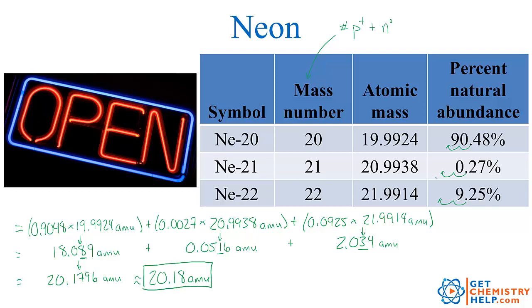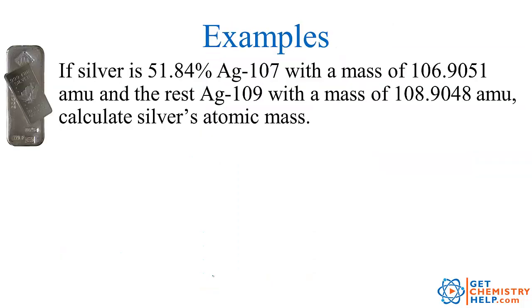So again, this is an average of all three of these isotopes together. Now, does this answer make sense? Well, let's see. We know that most of it, over 90% of it, had a mass of basically 20, and a little tiny bit of it was about 21, and a little tiny bit of it was 22. So it should be pretty close to 20, and it was. It came out to be 20.18. This number also matches the value you see on your periodic table.